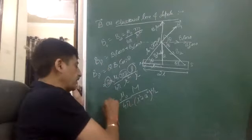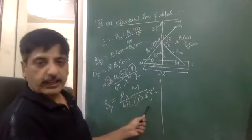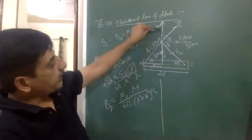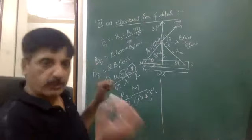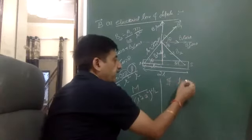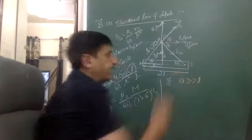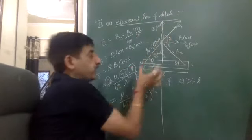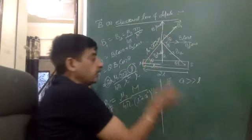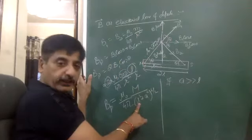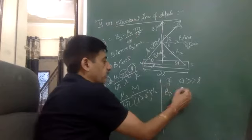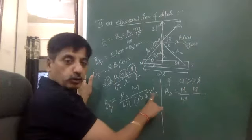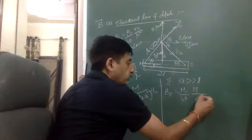This magnetic field is a general formula. If A is very much greater than L — meaning the observation point is far from the dipole center and the half-length L is negligible — then we neglect L squared, and the formula simplifies to mu0 by 4π, M over A cubed. This is the short dipole equatorial magnetic field.